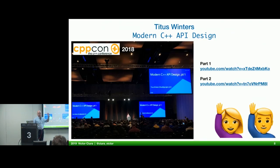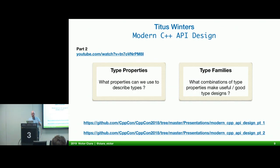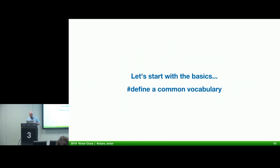Has anyone seen this two-part series of talks by Titus Winters from CppCon? I do highly recommend that you watch them when you have the time. I'm going to draw your attention to part two, which focuses on type properties and what properties can describe types, and type families as a combination of properties that make useful type design. But let's start with the basics. Before we begin analysis, we have to build a common vocabulary so we know what we're talking about as a group.